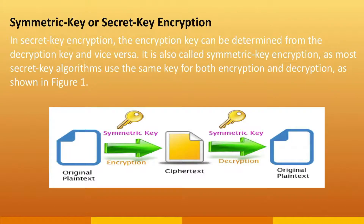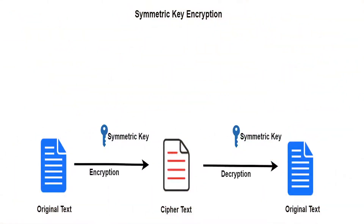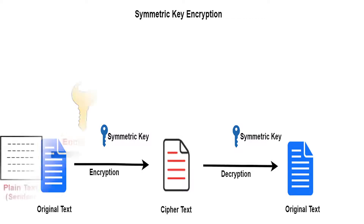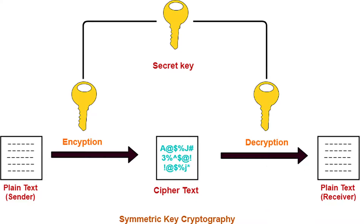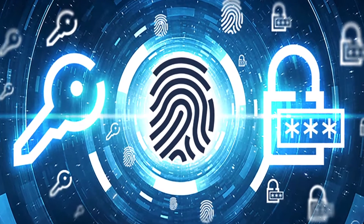The following keys are used for encryption and decryption: secret key or symmetric key encryption, and public key or asymmetric key encryption. In secret key encryption, the encryption key can be determined from the decryption key and vice versa. It is also called symmetric key encryption as most secret key algorithms use the same key for both encryption and decryption. Since implementations of symmetric key encryption are highly efficient, users do not experience any substantial time delay as a result of the encryption and decryption. Since information encrypted with one symmetric key cannot be decrypted with any other symmetric key, symmetric key encryption provides a greater degree of authentication.